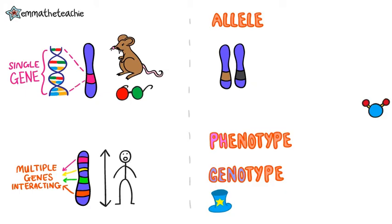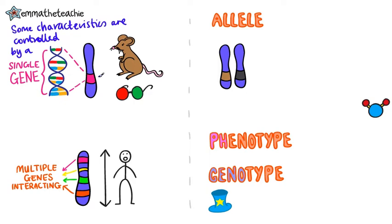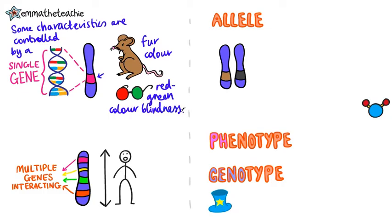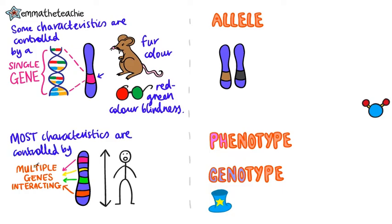In the DNA video, we learned that genes are sections of DNA that code for proteins. Some characteristics are controlled by a single gene, such as fur color in mice and red-green color blindness in humans. But most characteristics are the result of multiple genes interacting, rather than a single gene — for example, height in humans.